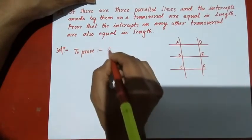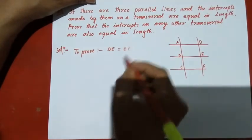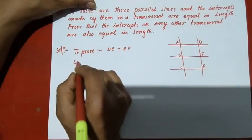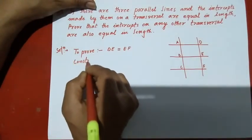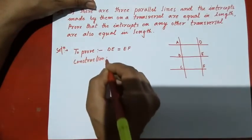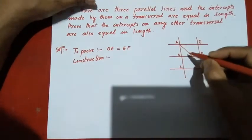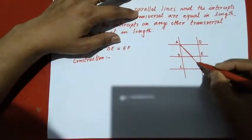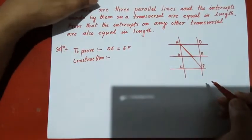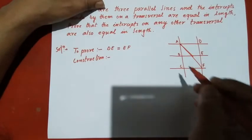Given that DE is equal to EF. For the construction, we join AF and also join DC.